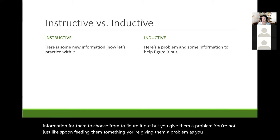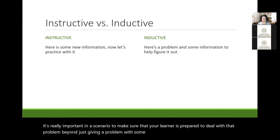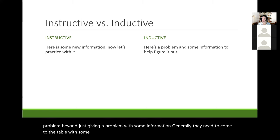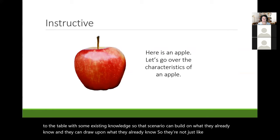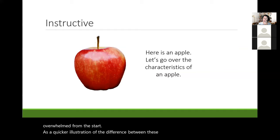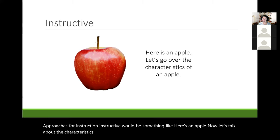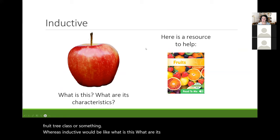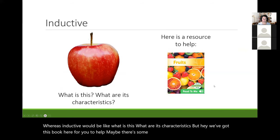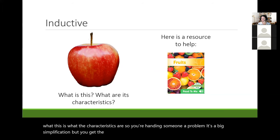It's really important in a scenario to make sure that your learner is prepared to deal with that problem. Generally, they need to come to the table with some existing knowledge so the scenario can build on what they already know and they're not completely overwhelmed. As a quick illustration: instructive would be something like 'here's an apple, now let's talk about its characteristics.' Whereas inductive would be 'what is this? Figure it out, here's a book to help, come back with a full presentation.' It's a big simplification, but you get the idea between instructive and inductive.